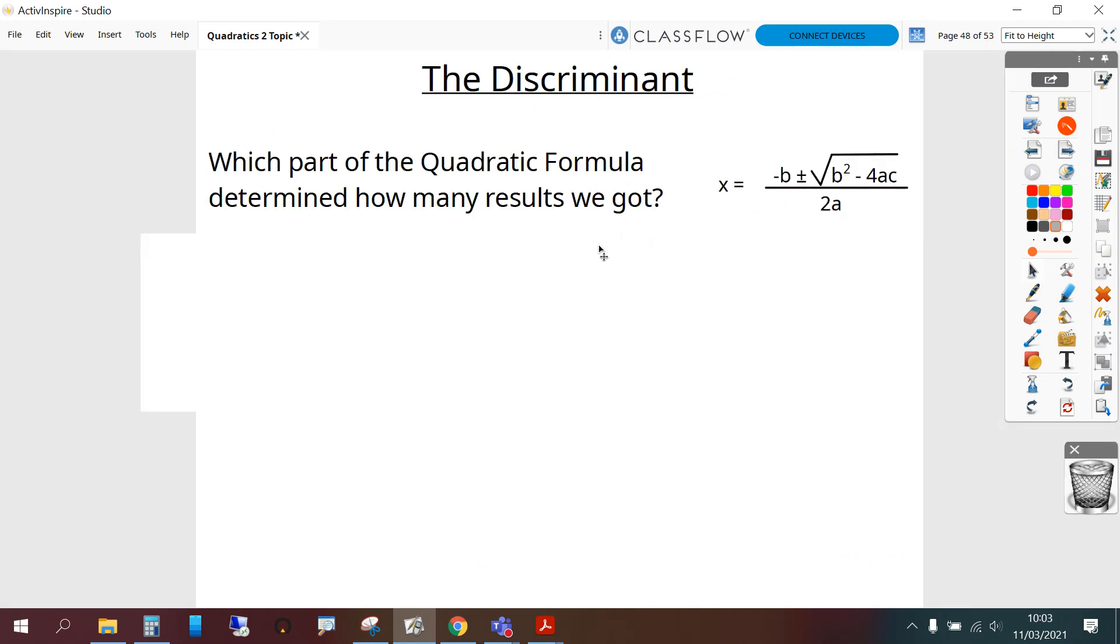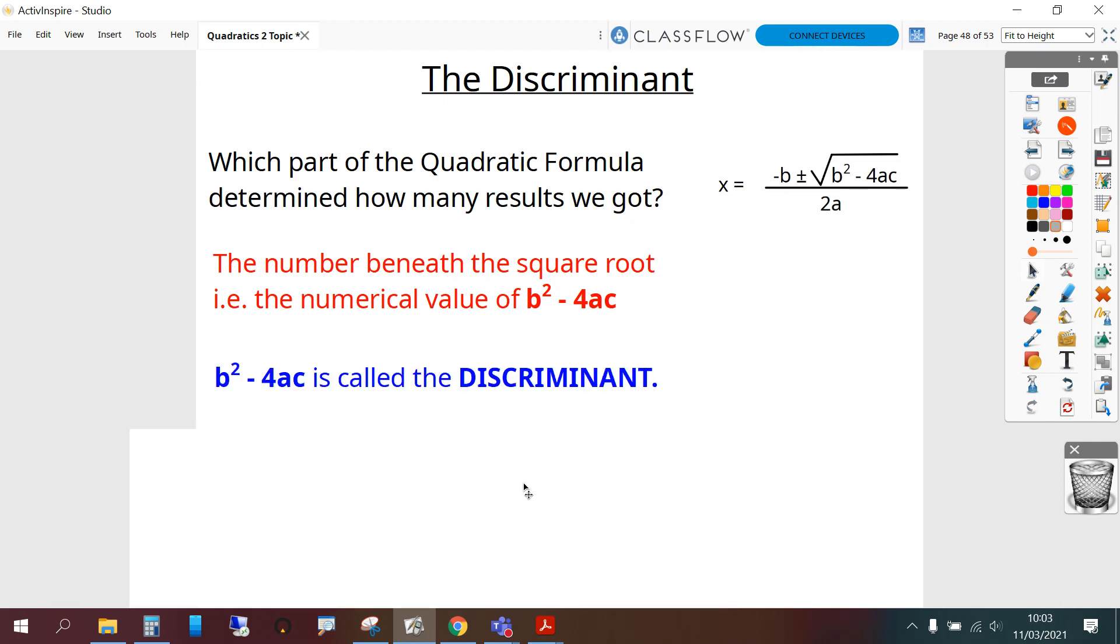So which part of the quadratic formula determined how many results we got? The number beneath the square root, i.e. the numerical value of b squared minus 4ac. b squared minus 4ac is called the discriminant.